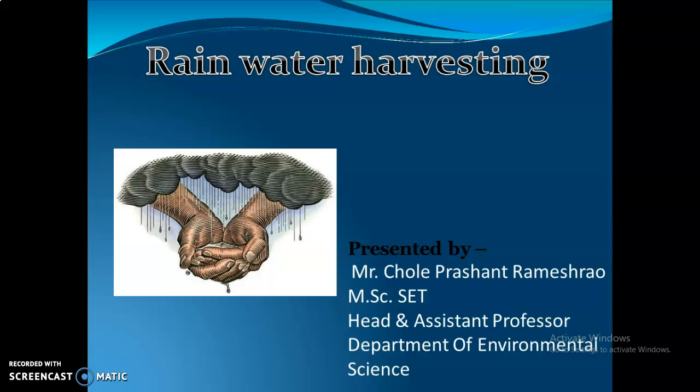Basically, water comes onto the surface with rain. However, it gets collected in rivers and in the ocean. We can catch this rainwater and store it. This process of catching and storing rainwater is called rainwater harvesting.